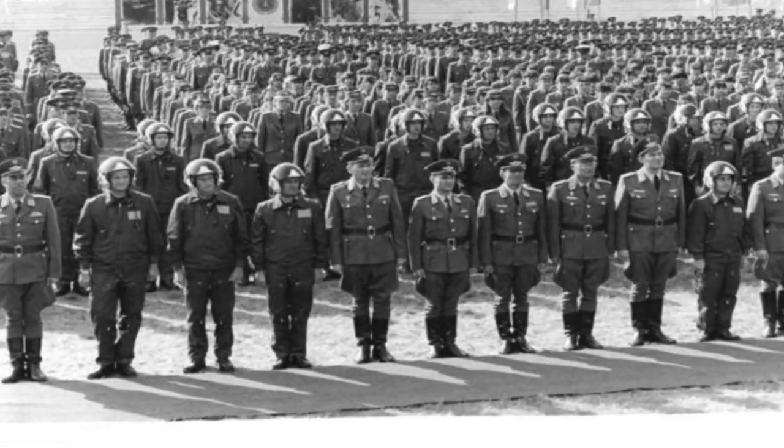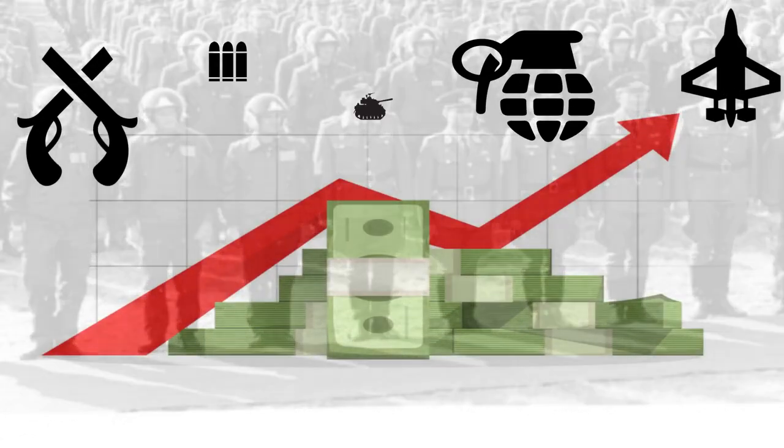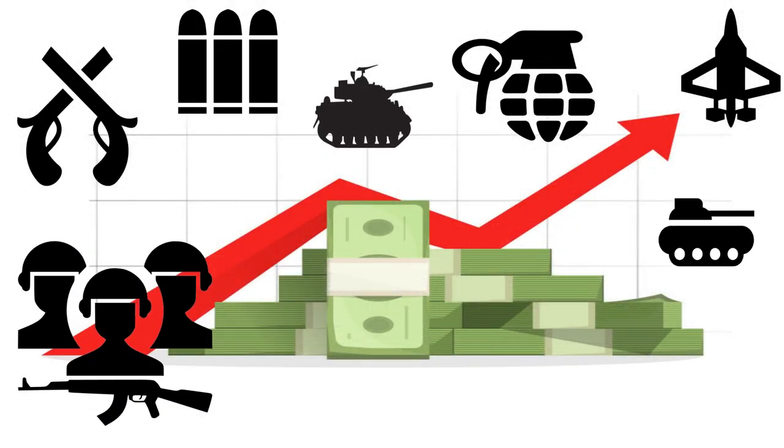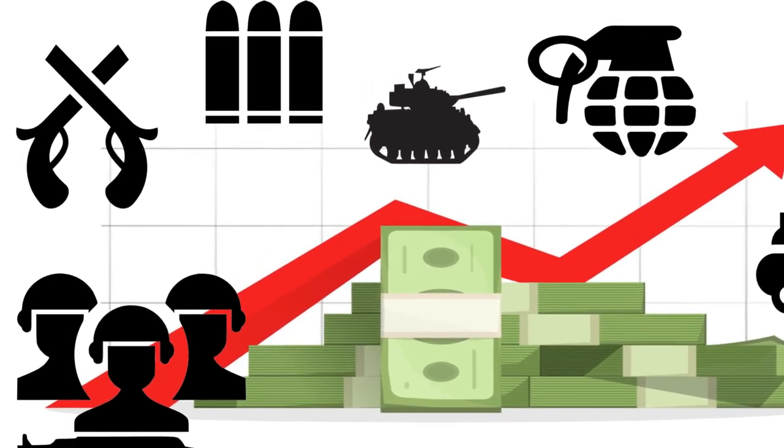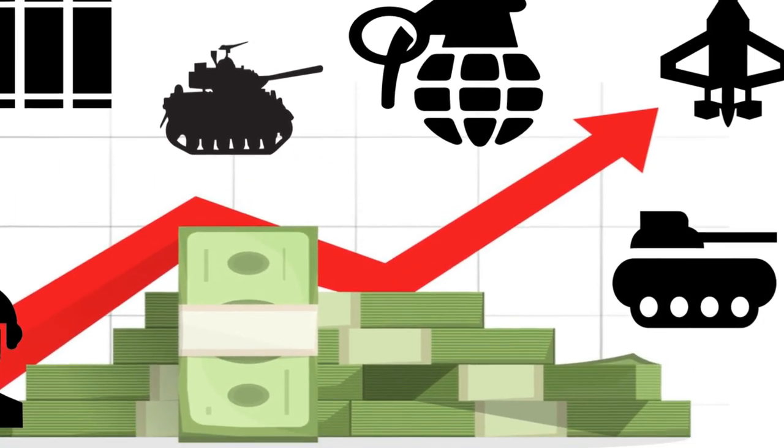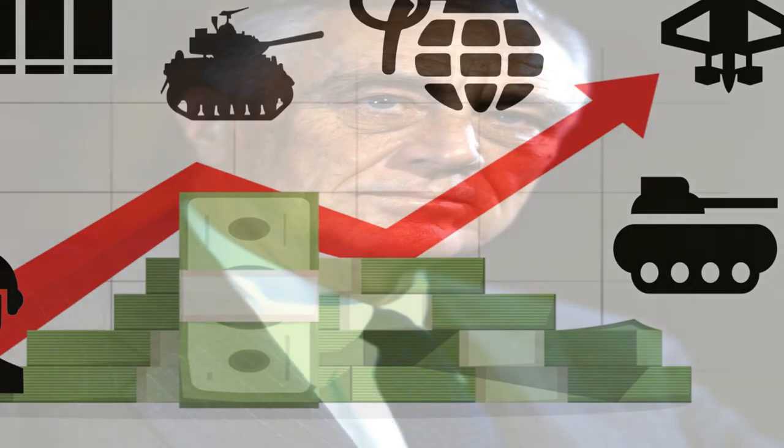The Great Depression ended with the start of World War 2, where governments spent tons of money in production. Also, recovery measures taken by President Franklin Delano Roosevelt helped the economy get back on its feet again.